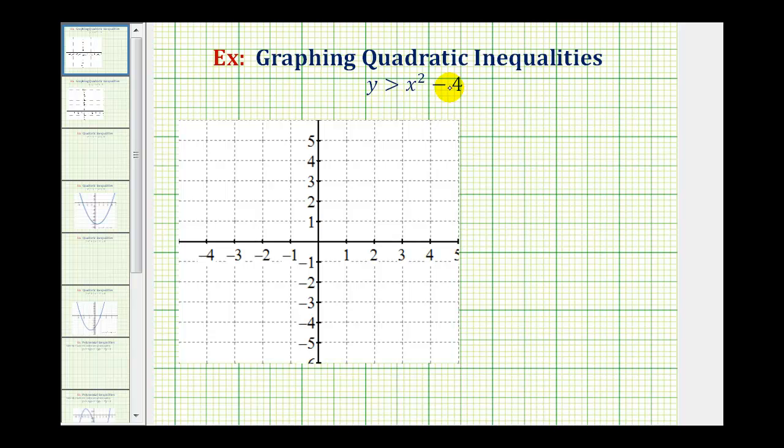The first step in graphing this solution will be to graph the curve y equals x squared minus four. But because we want the region where y is greater than x squared minus four, the points on y equals x squared minus four will not satisfy this inequality and therefore the graph of our parabola will have to be dashed. If it said y is greater than or equal to x squared minus four, then these points would satisfy the inequality and therefore the graph of our parabola would be solid.